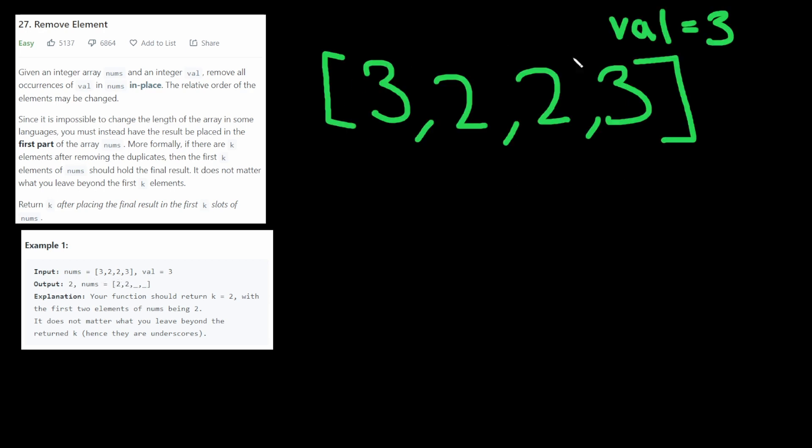For example, we have this input array and our val is three. We have to remove all of the threes from this array. And we must do it in place. This means we cannot allocate memory for another array and return that one instead.